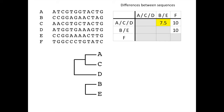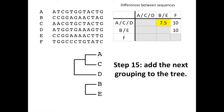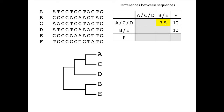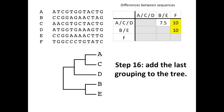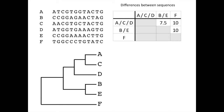We can see that this is the A-C-D group with the B-E group, with an average of 7.5 differences. So we can add the next grouping to the tree, grouping the A-C-D group with the B-E group. This now leaves us with one more sequence, F, that is equally distantly related to all the other sequences, with ten differences to each of them. So we can add this last grouping to the tree, reflecting the distant relationship between F and all the other sequences.